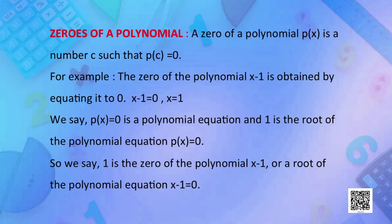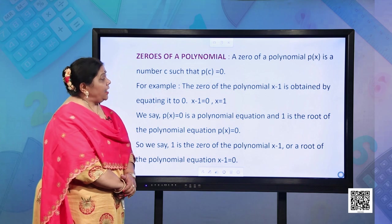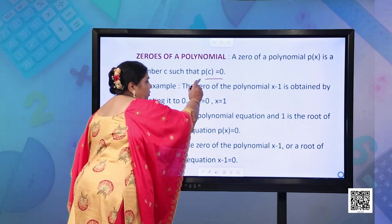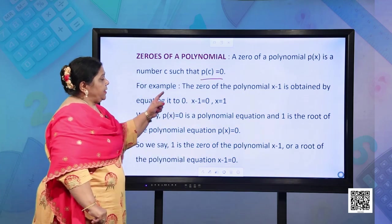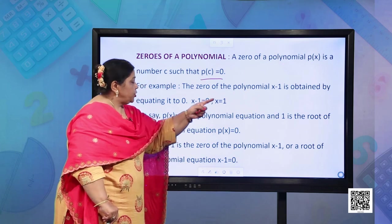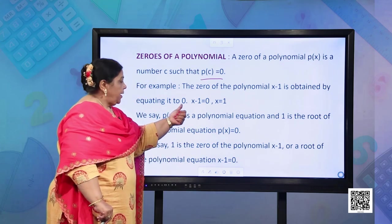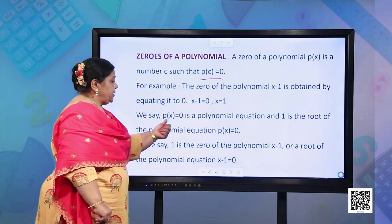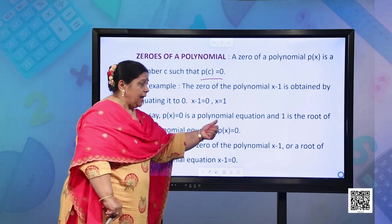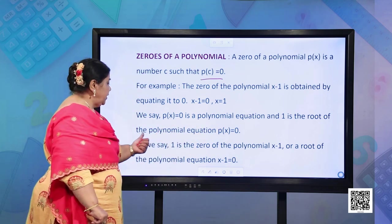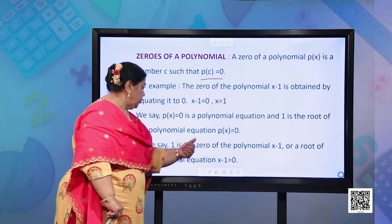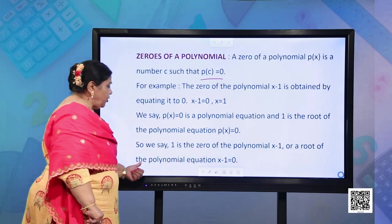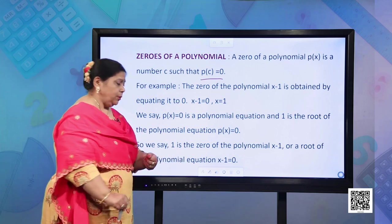We have also studied about zeros of a polynomial in class 9. A zero of a polynomial p(x) is a number c such that p(c) = 0. For example, the zero of the polynomial x−1 is obtained by equating it to 0: x−1 = 0, which means x = 1. We say p(x) = 0 is a polynomial equation, and 1 is the root of the polynomial equation p(x) = 0. So we say 1 is the zero of the polynomial x−1, or a root of the equation x−1 = 0.